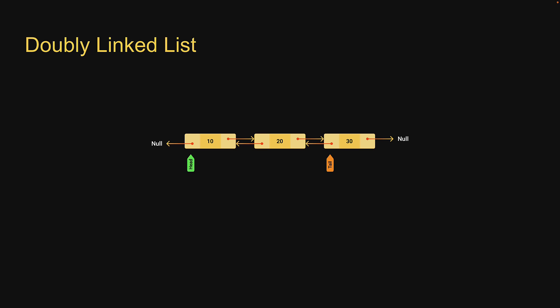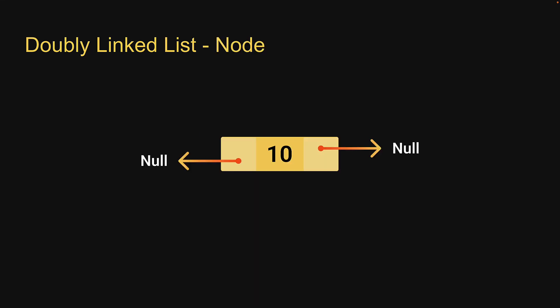Let me help you understand the common operations with a visual representation. As you can see, a node in a doubly linked list contains two pointers: previous and next. With this in mind, let's understand the insertion, deletion, and traversal operations.